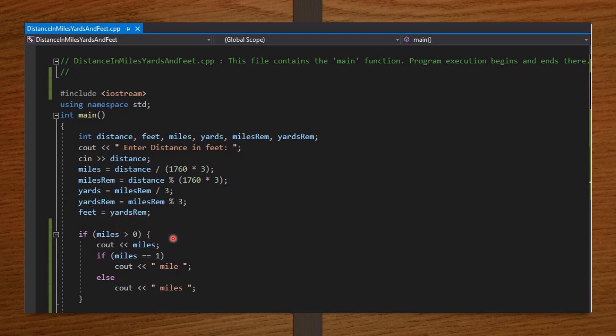Now, to the ifs. If miles is greater than 0, cout miles, display miles. Then, if the miles is equal to 1, attach 'mile', else, attach 'miles'. So, we are going to do this same thing for yards and then feet.